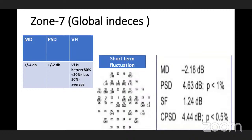VFI — visual field index or staging index — indicates the severity and vision potential of the eye, expressed as a percentage. Above 80% means better visual field; below 20% means worse; 50% is average. Short-term fluctuation indicates intra-test variability: the light blinks twice, values are rechecked, and the difference between them is measured. More than 3 dB indicates an unreliable result; the normal value is plus or minus 2 dB.